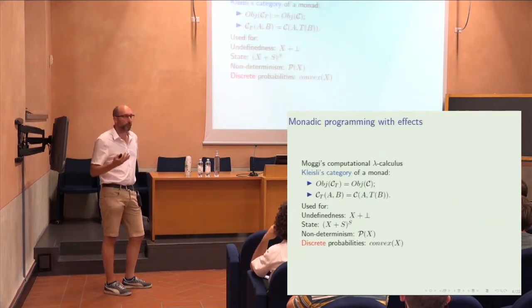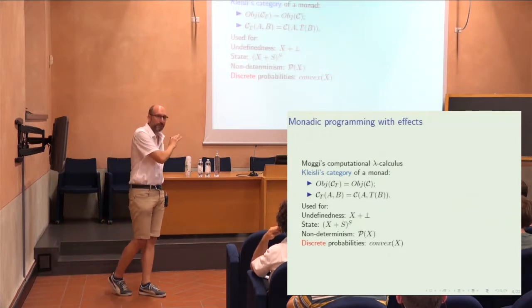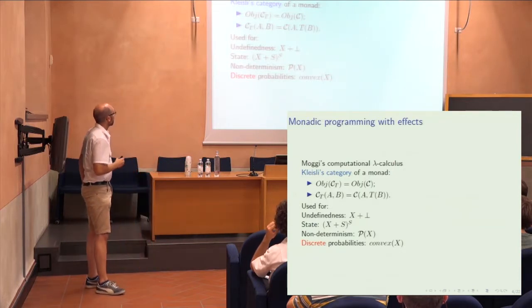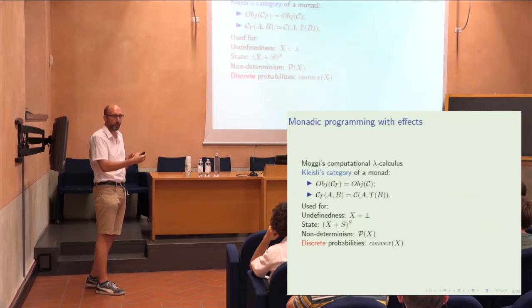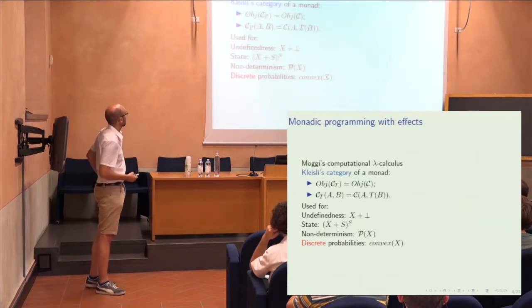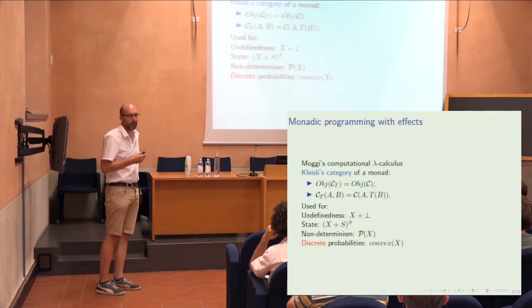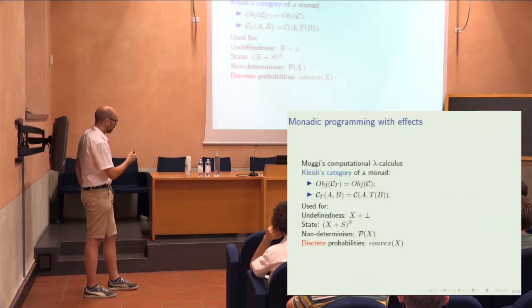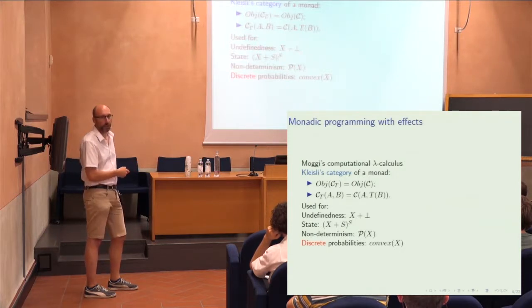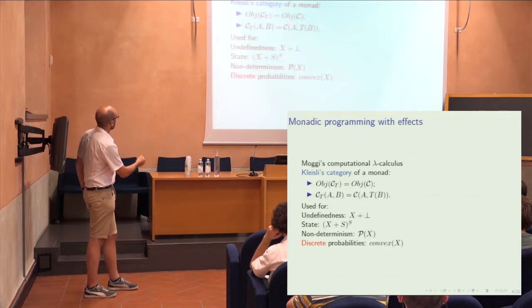This will be very standard for probably half the audience, but I want to point it out for the other half. What Haskell programmers do, following the work by Moggi, is to use a Cartesian closed category to write all their functional programs. But there are a number of awkward constructions that don't completely work. Moggi pointed out that this can be neatly organized using a monad. For instance, if you want a notion of undefinedness, you use the plus-one monad — you add a bottom element to every type and use the Kleisli category.